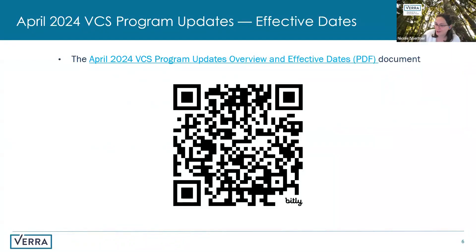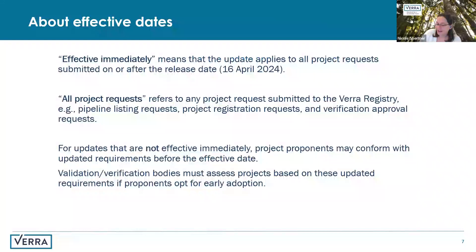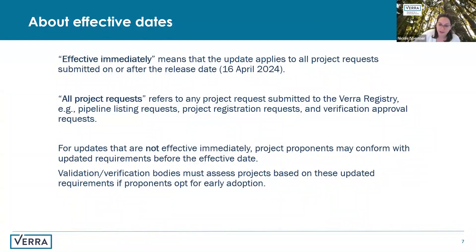I do hope the QR code works. Feel free to let us know in the chat if it doesn't, but otherwise you can find it by Googling 'April 2024 BCS Program Updates Overview and Effective Dates' and you should be able to easily find the document on your browser. This is general background information about how effective dates are worded, since we know we always get a lot of questions about these. We're trying to be a little bit better about explaining what effective dates means, and this information is also included in the introduction of the Effective Dates document.